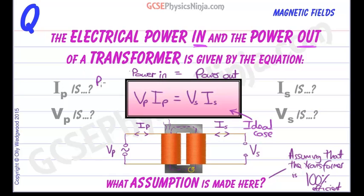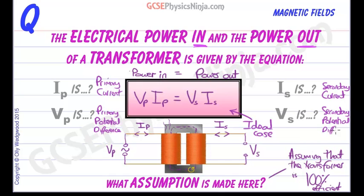IP is the primary current. VP is the primary potential difference or voltage. I subscript S is the secondary current, secondary coil current, and V subscript S is the secondary potential difference. And that's the equation which links the power in with the power out for the ideal case assuming that the transformer is 100% efficient.